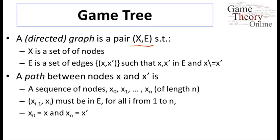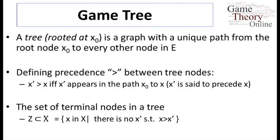That's a general graph. A tree is a special case where there is a specialized node called root, and there is not only a path from that node to every other node, but a unique path — so there are no cycles in a tree. This naturally defines the relationship of precedence, which is a partial ordering: one node precedes another if it is on the path between the root node and the second node. Of course, there could be two nodes neither of which precedes the other. Finally, we define the set of terminal nodes, Z, to be a subset of the nodes such that there is no node that they precede in the tree.